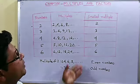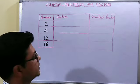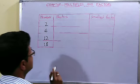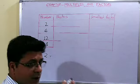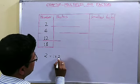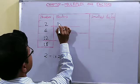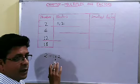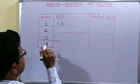Now let us discuss the other term: factors. We shall take some numbers and write their factors. The question is how to find the factors. Let us take the number 2. We shall always start from 1. 1 into how much is 2? It is 2. So 1 and 2 are the two factors. We cannot move beyond 2 because 3 into something does not give 2.